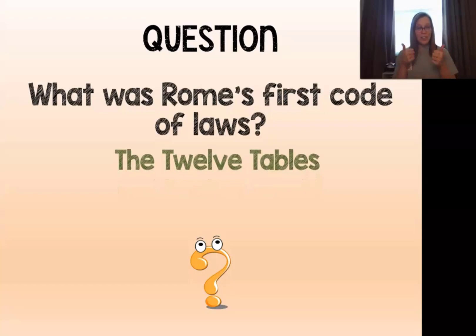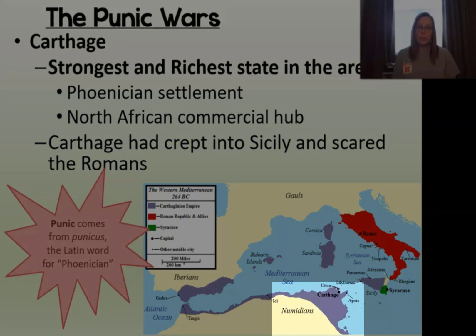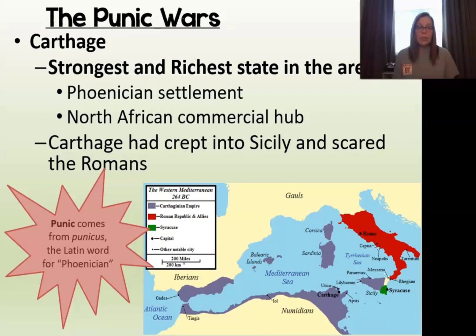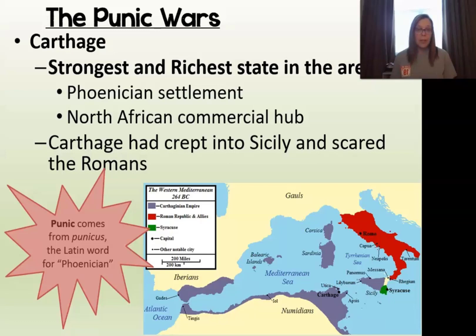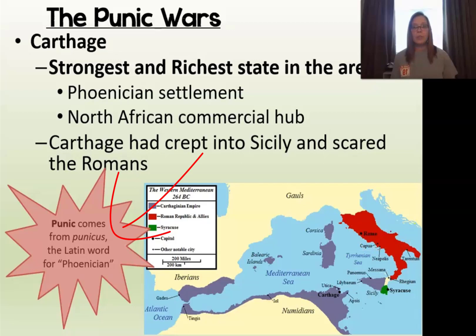Now we're going to talk about the Punic Wars — your second essential question for this set of notes. The Punic Wars was a series of wars fought between Rome and another civilization called Carthage. Carthage was the strongest and richest state in the area. It was a Phoenician settlement — the Phoenicians were the sea people who developed the Phoenician alphabet adopted by the Greeks and Romans and were very good at seafaring. The word Punic comes from Punicus, a Latin word for Phoenician, which is why these wars were called the Punic Wars.